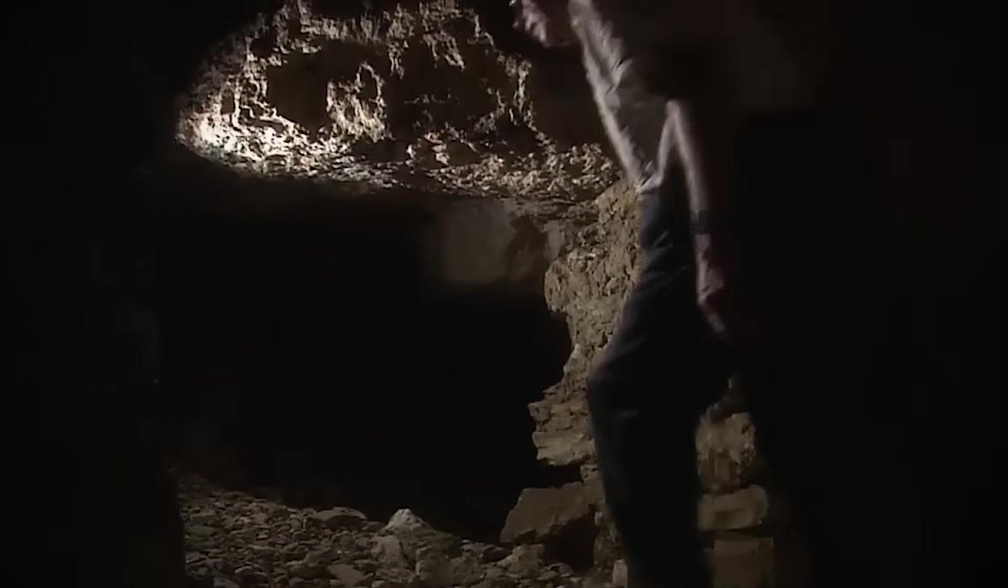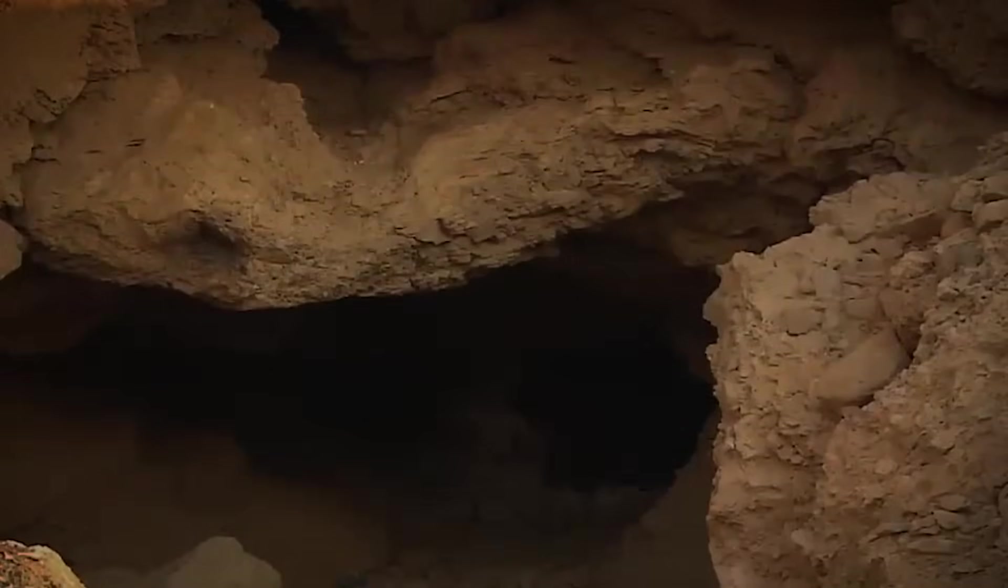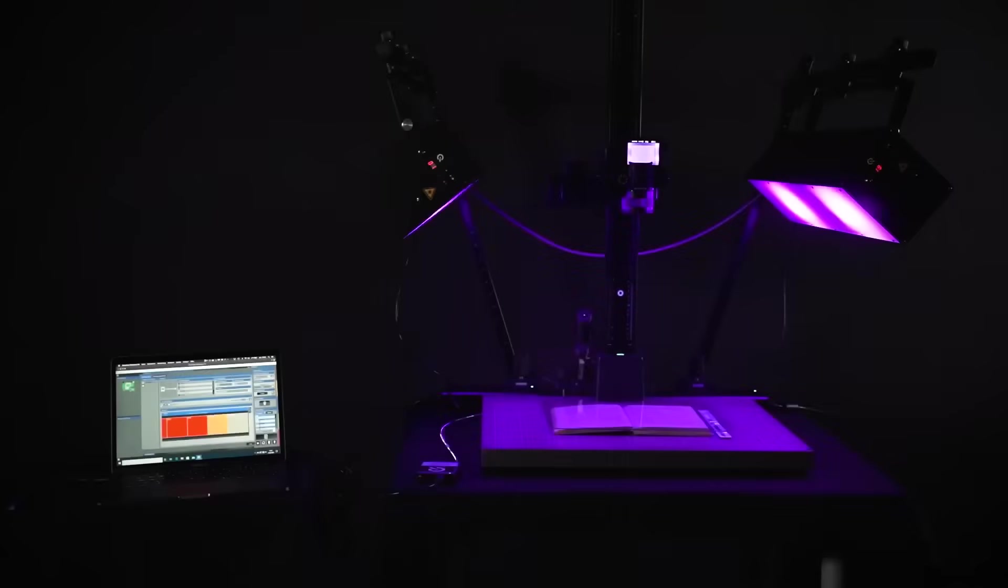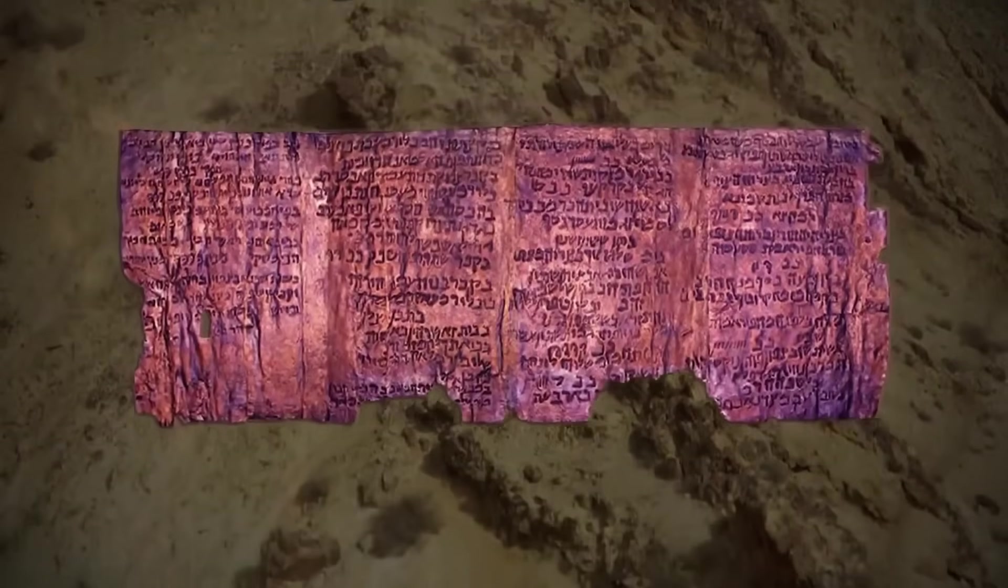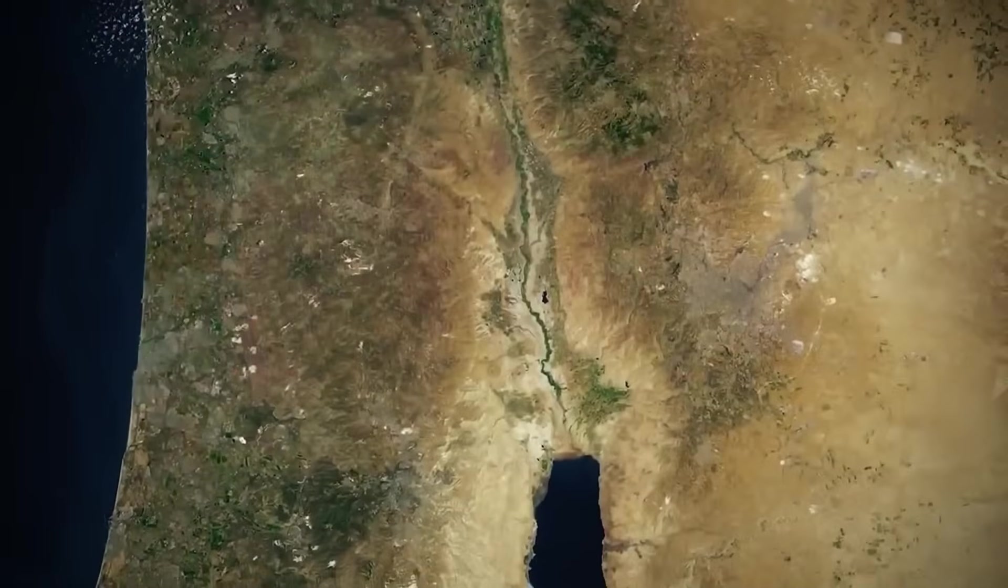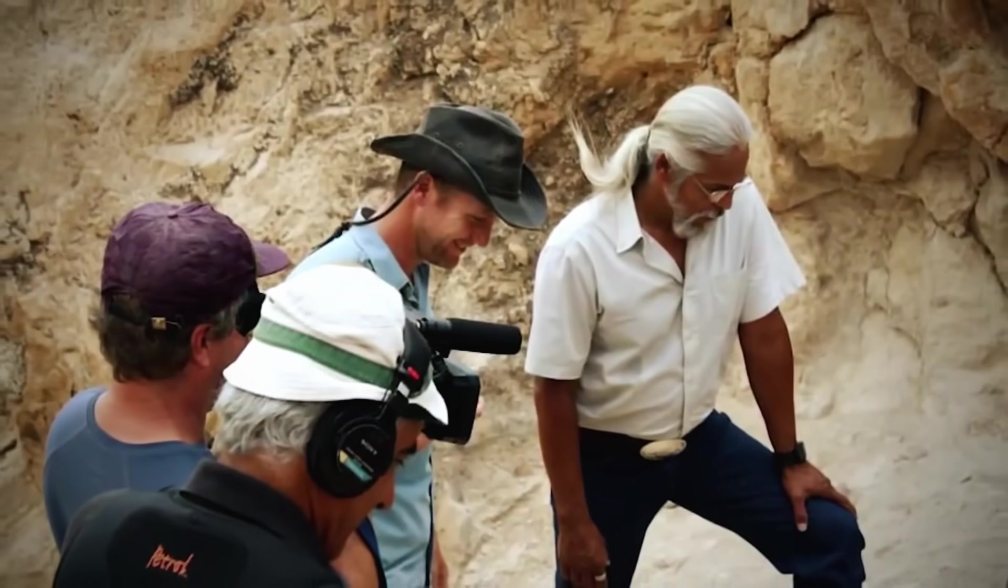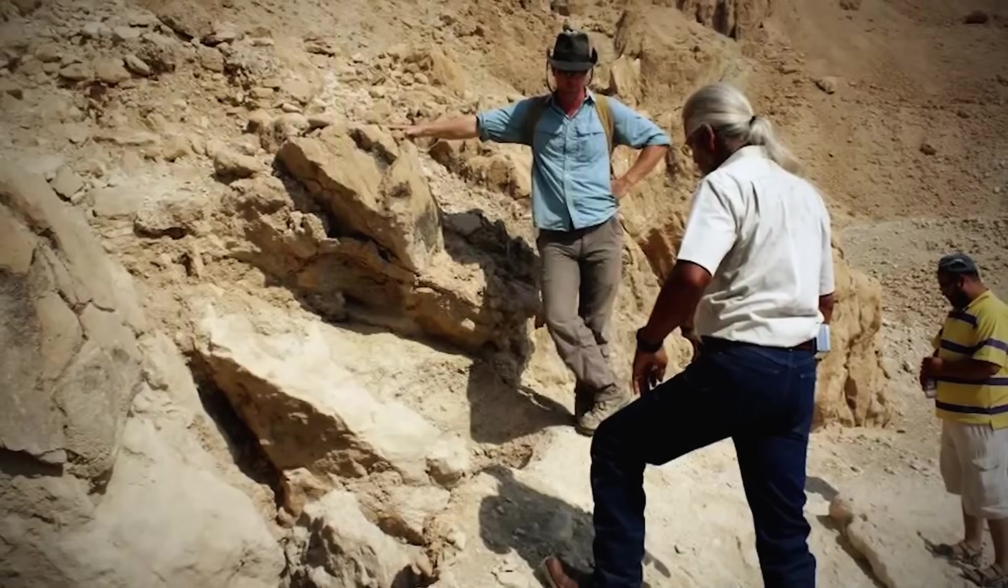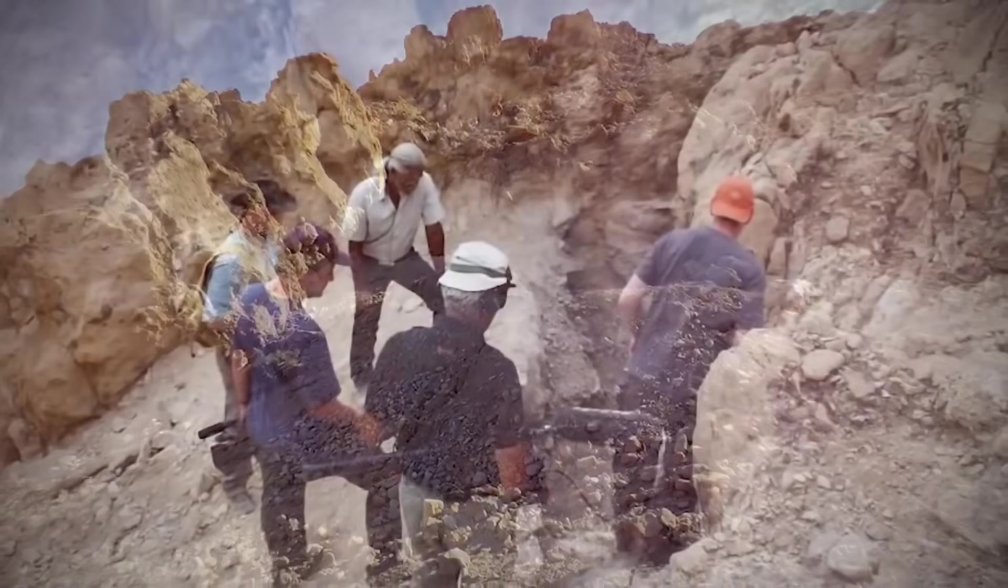Either way, the Copper Scroll is no longer just a treasure map. It's a mystery that forces us to rethink the line between myth and science. How many other ancient texts contain hidden technical knowledge, waiting for the right technology to decode them? What other secrets lie buried beneath desert sands, encoded in scrolls, or hidden in plain sight within the words we thought we understood? The quantum revolution isn't just changing our future. It's illuminating our past in ways we never imagined possible.